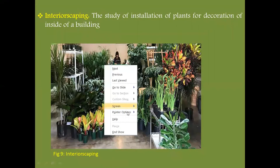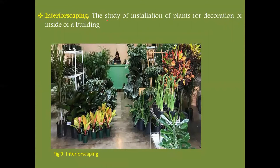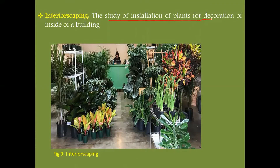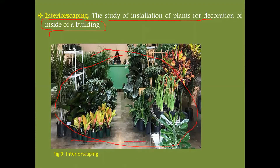Next is interiorscaping. Interiorscaping is the study and installation of plants for the purpose of decoration inside a building. Different types of ornamental plants and flowers are used for decorative purposes inside buildings. In figure nine, various types of ornamental plants and flowers are shown installed for decorative purposes.